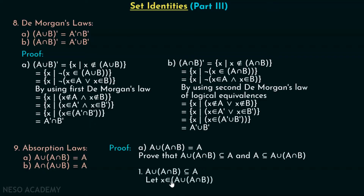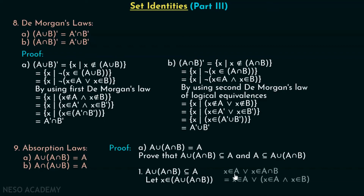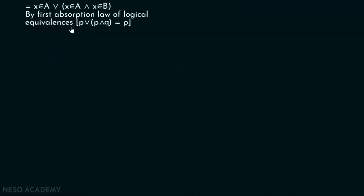For this, let us assume that X belongs to A union A intersection B. The idea is: if X belongs to A union A intersection B, then X must belong to A as well. Assuming X belongs to A union A intersection B means X belongs to A or X belongs to A intersection B. In other words, X belongs to A or X belongs to A and X belongs to B. By the first absorption law of logical equivalences, P or P and Q is equal to P.